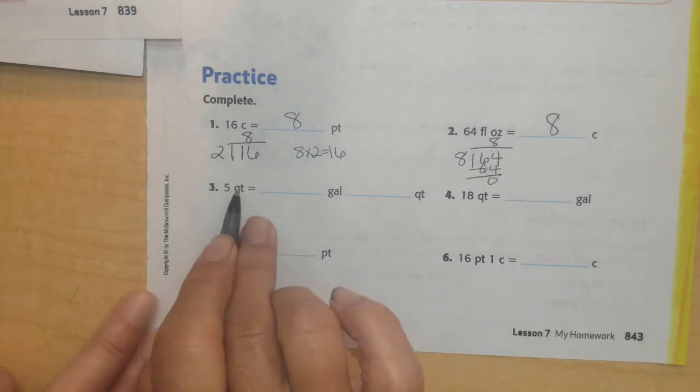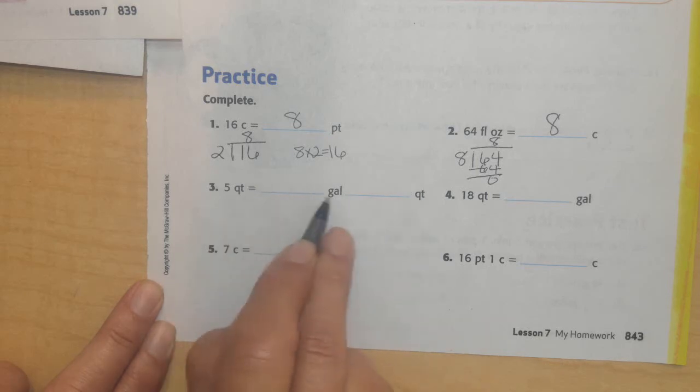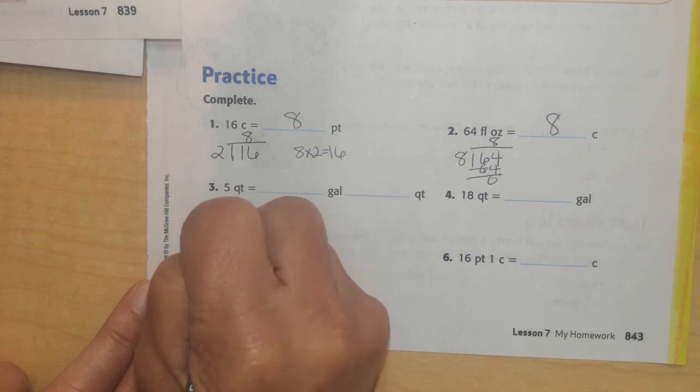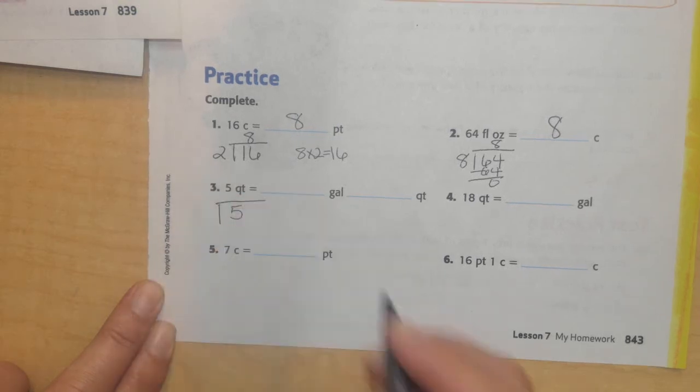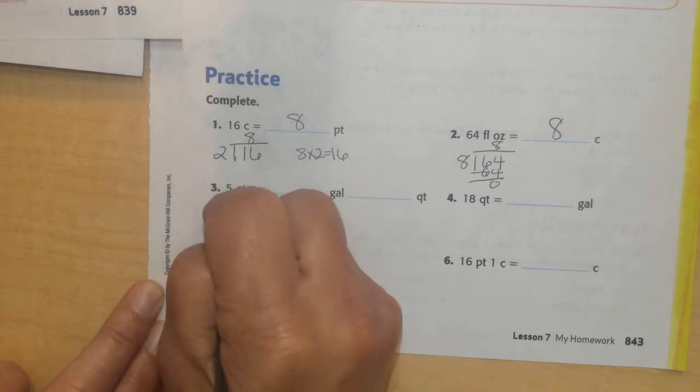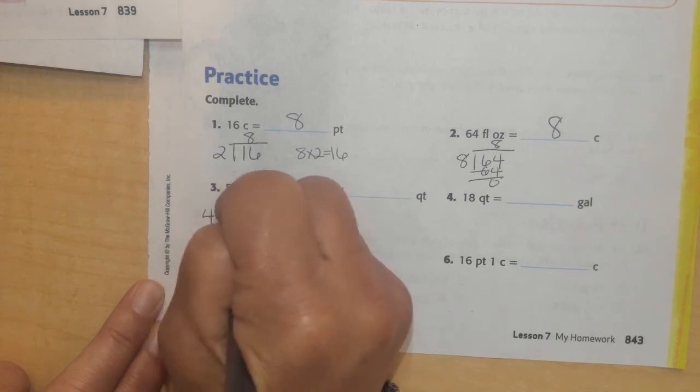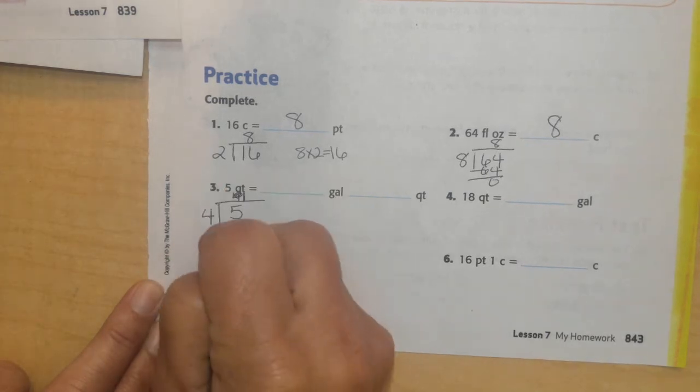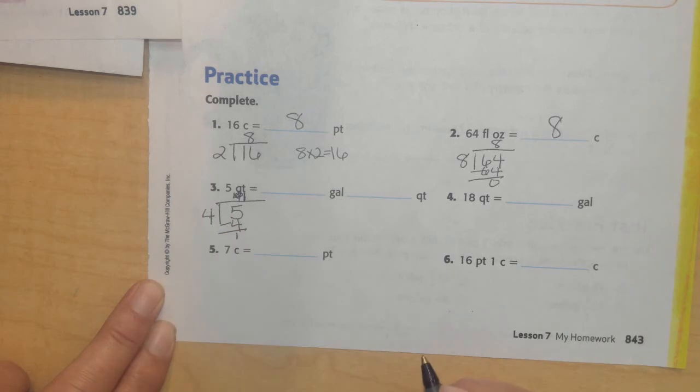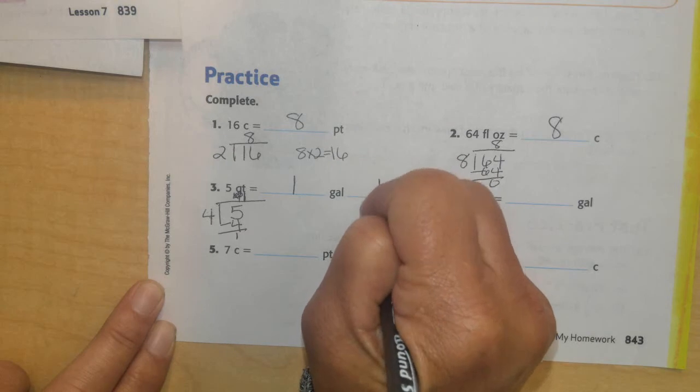All right, if I have 5 quarts, I want to figure out how many gallons and how many quarts. So again, I'm going to go from small to bigger. So I'm going to divide my 5 quarts, and figure out there's 4 quarts in 1 gallon. So I know I'm going to have 1. 1 times 4 is 4. I'll subtract and have 1 left over. So I'm going to have 1 gallon and 1 quart left over.